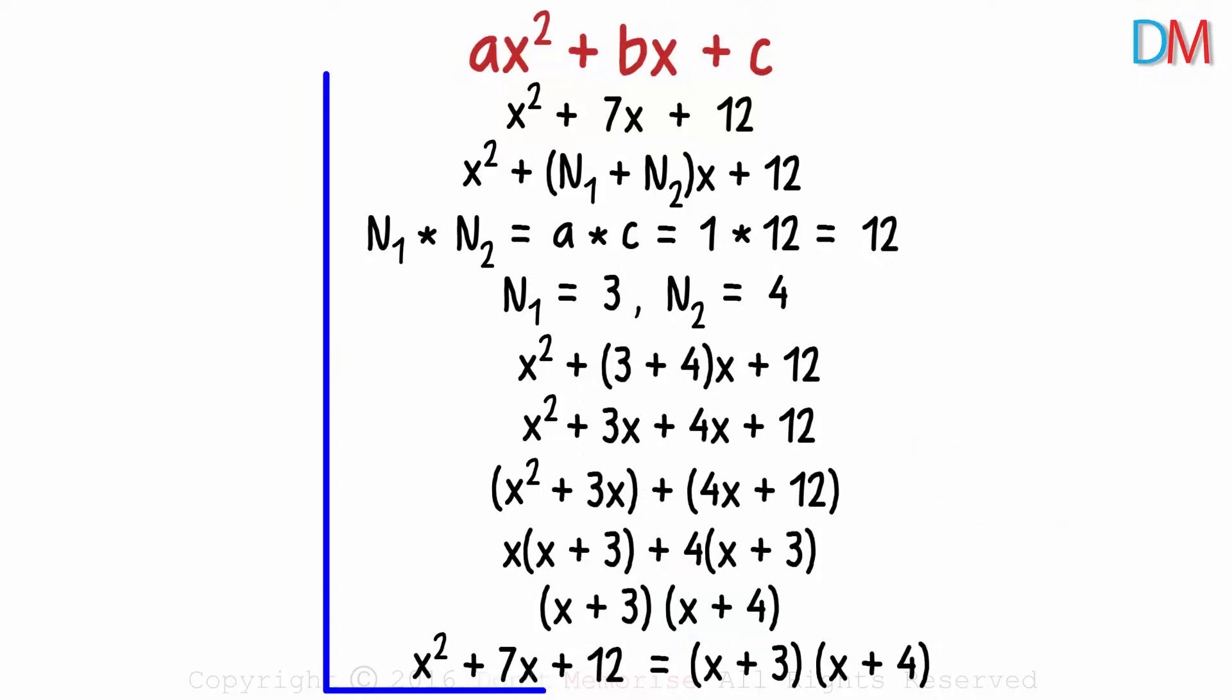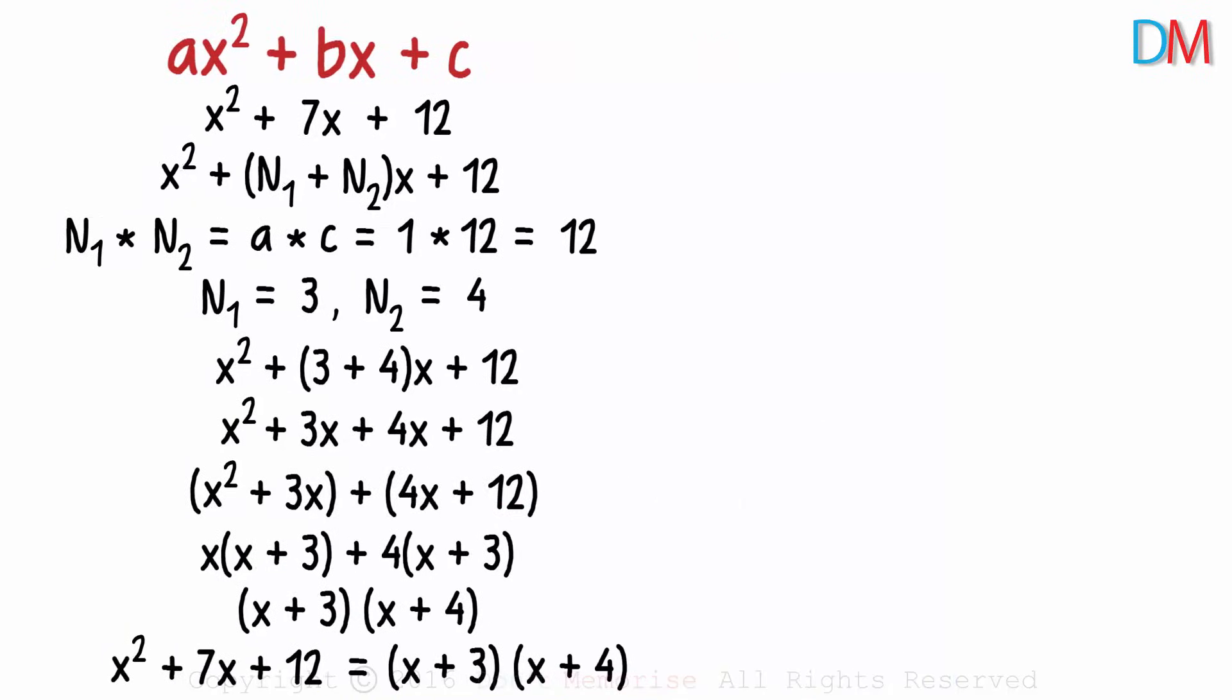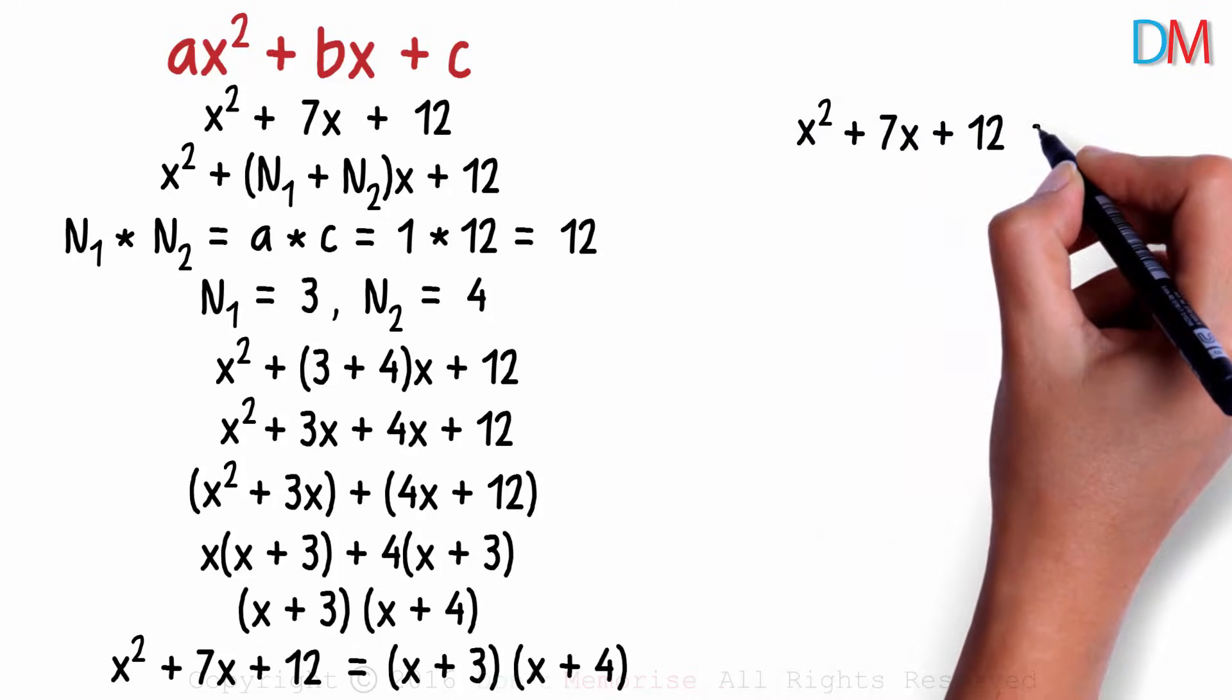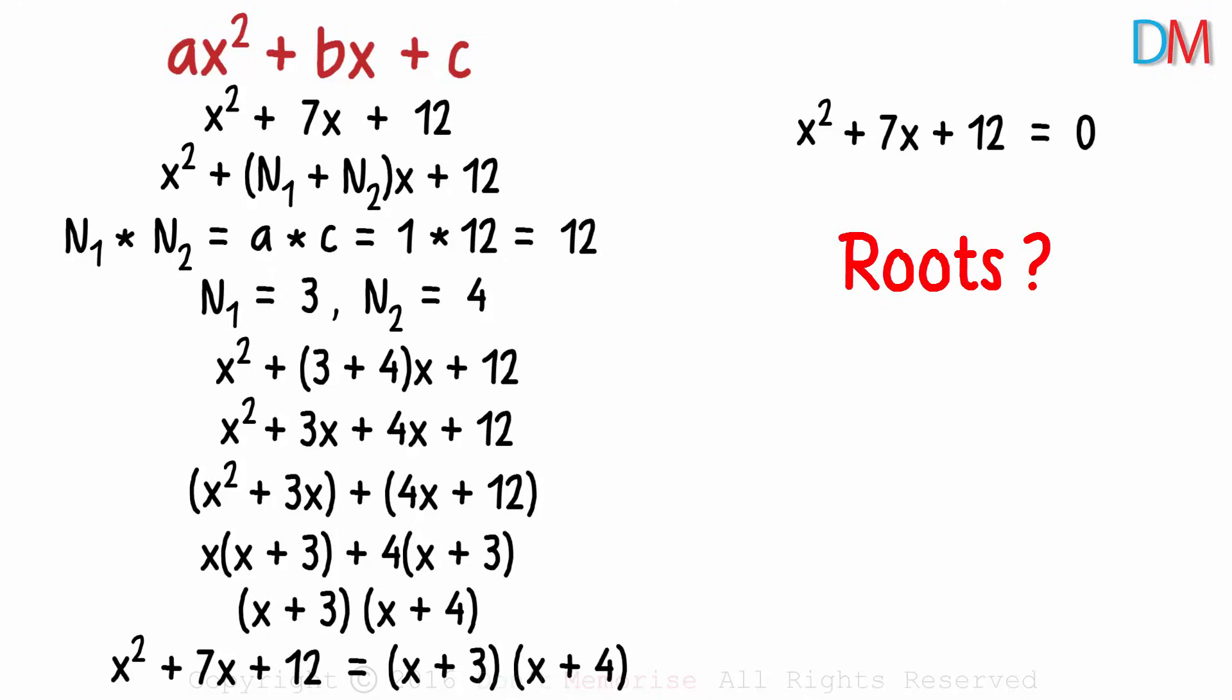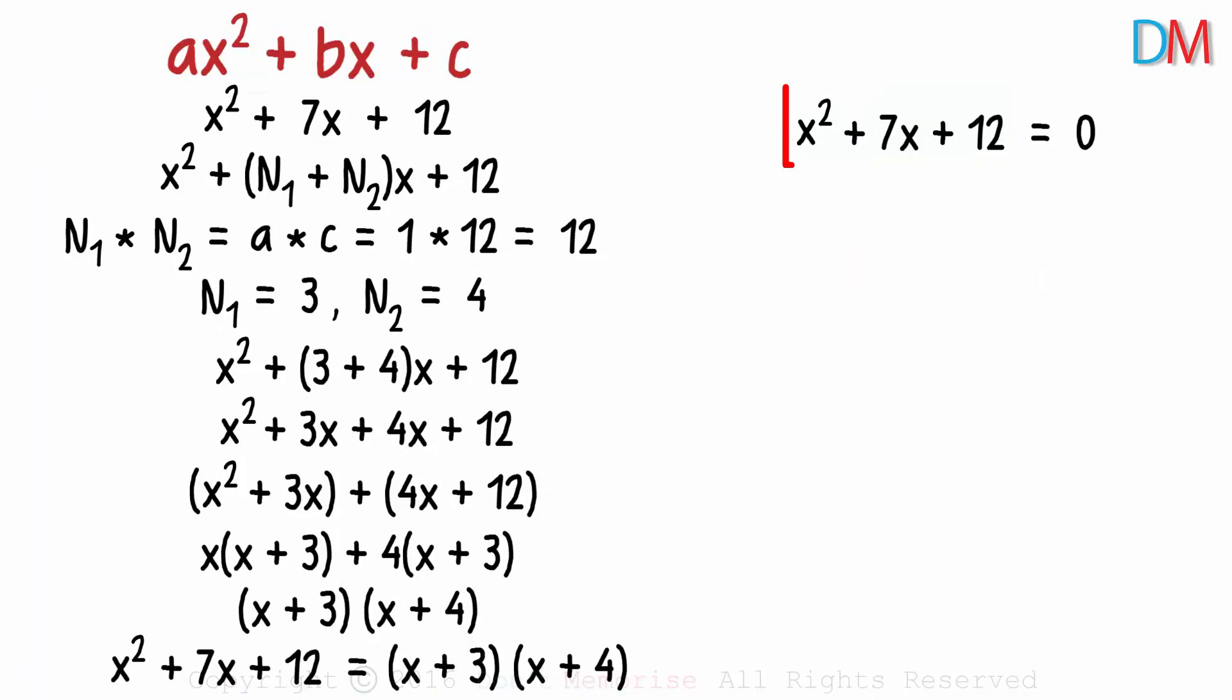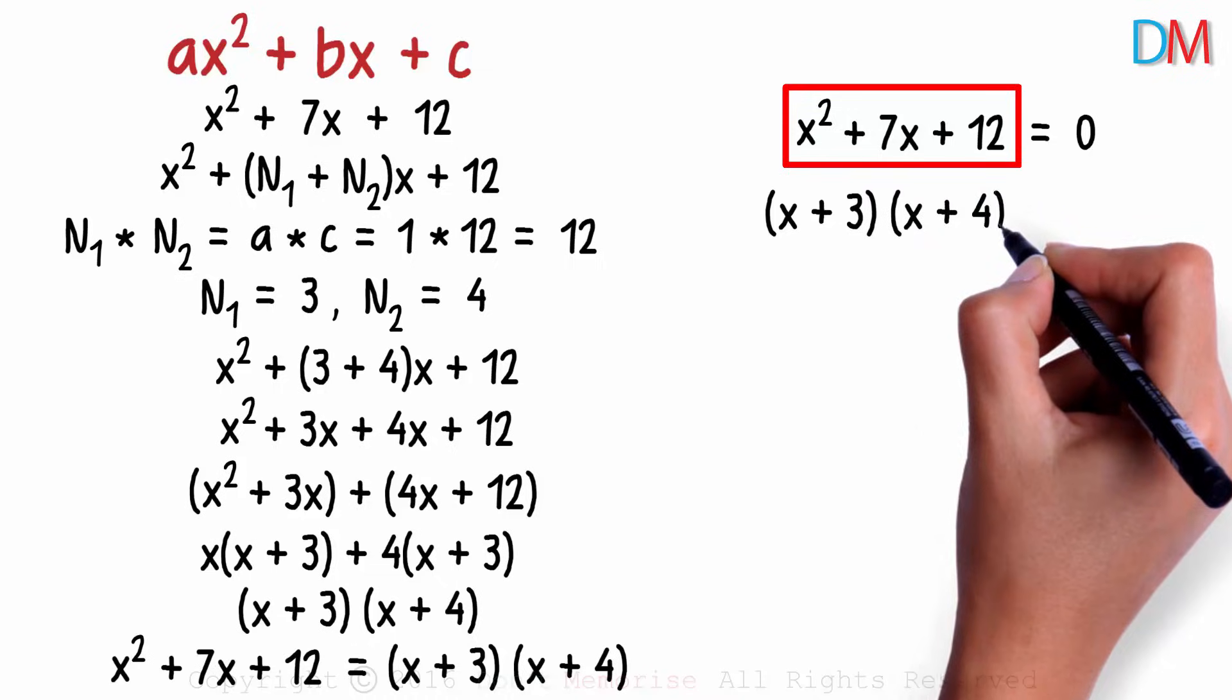If you understood this concept of factoring polynomials, then finding the roots of quadratic equations is very easy. Now assume that the quadratic equation we have is x squared plus 7x plus 12 equals 0, and we need to find its roots. By roots, we mean the value or the values of x which satisfy this equation. To find the solutions or the roots, all we need to do is factorize the polynomial on the left. As we've already seen how it's factorized, we can write this as x plus 3 times x plus 4 equals 0.